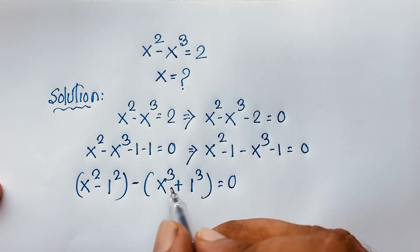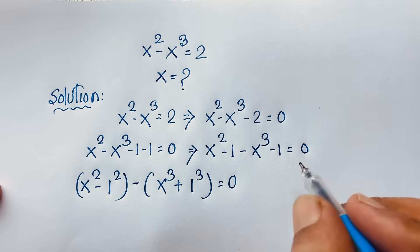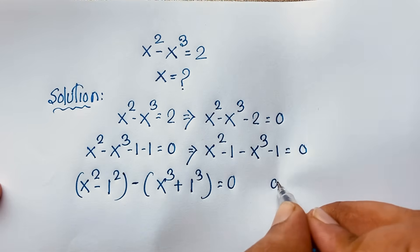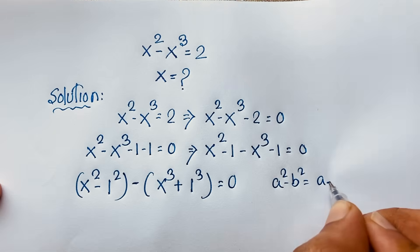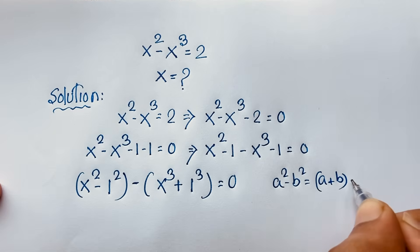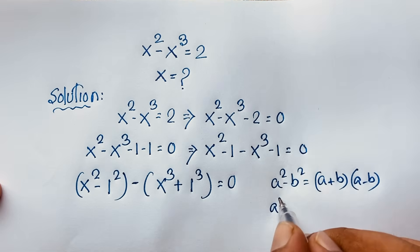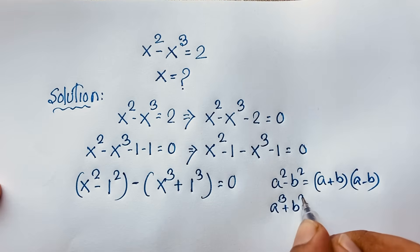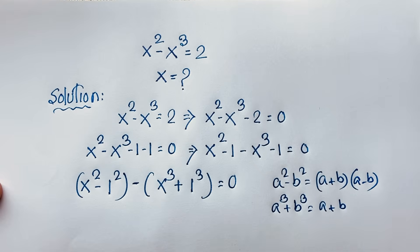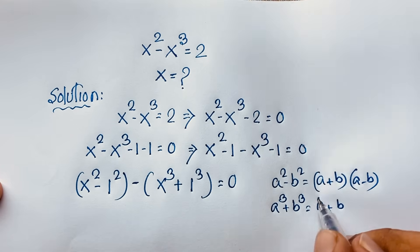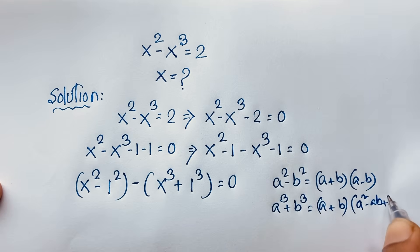Because of that, I want to use these formulas: a squared minus b squared, and a cubed plus b cubed. We know that a squared minus b squared equals a plus b times a minus b. And we know that a cubed plus b cubed equals a plus b times a squared minus ab plus b squared.